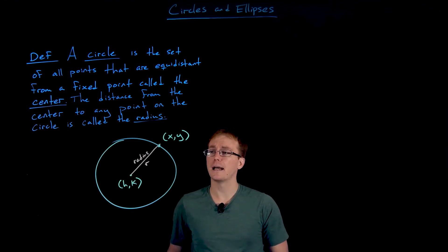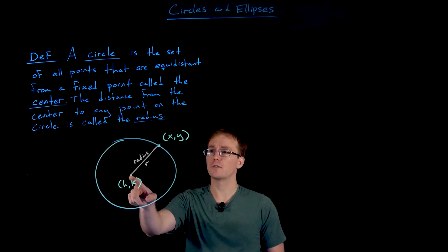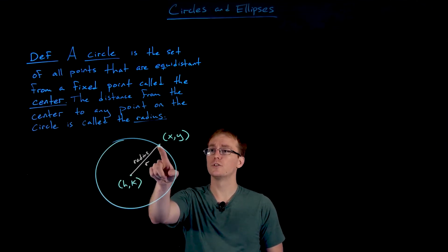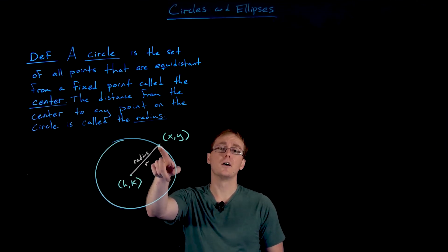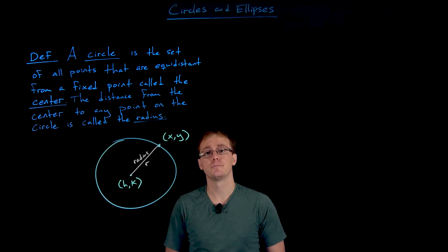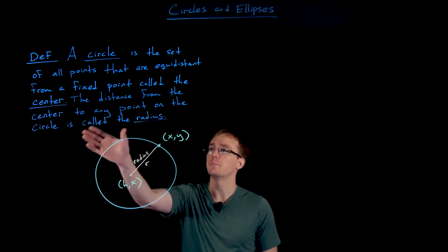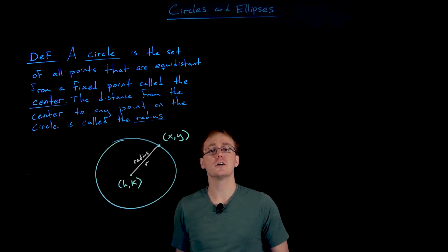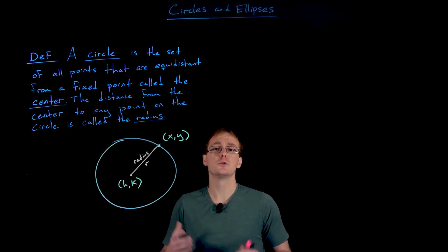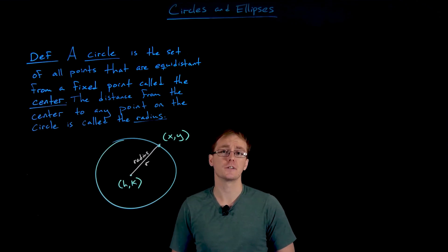The radius is drawn in orange. Remember, the radius is just the distance from the center of our circle to any point on the circle itself. Next, what we're going to do is work together to go from our geometric description of a circle to an algebraic definition of a circle instead.